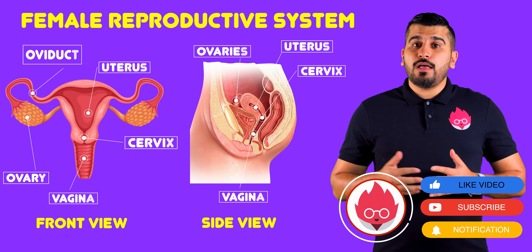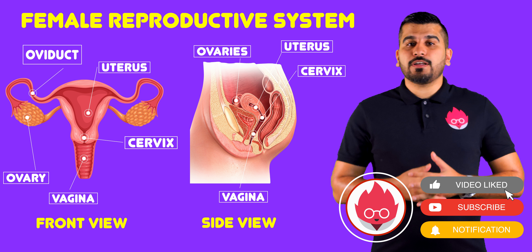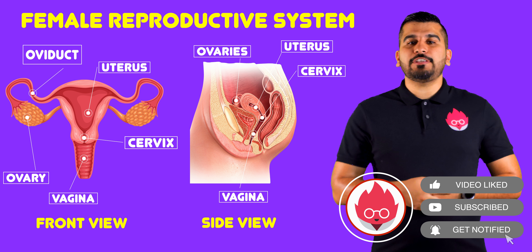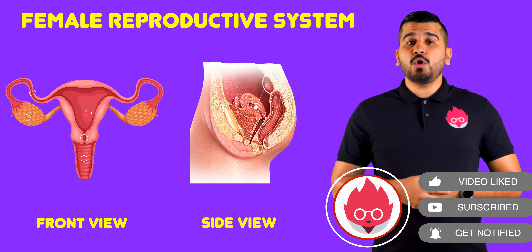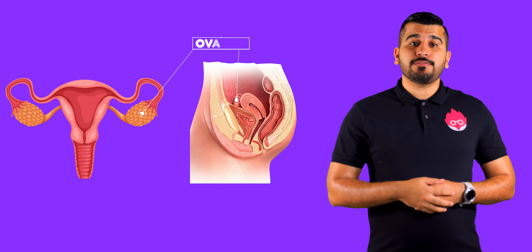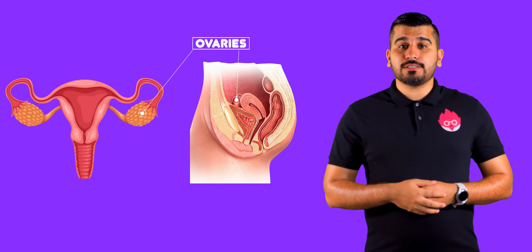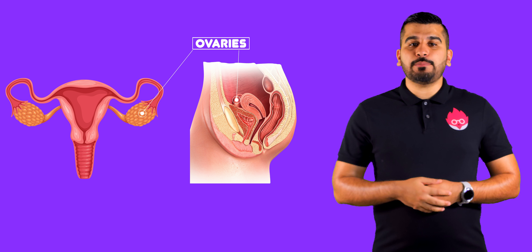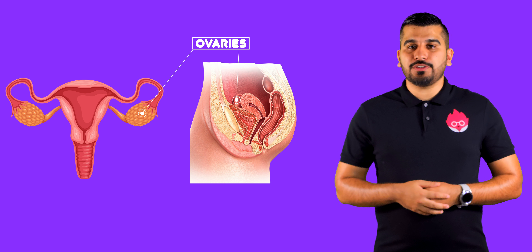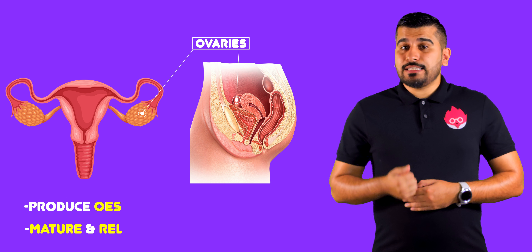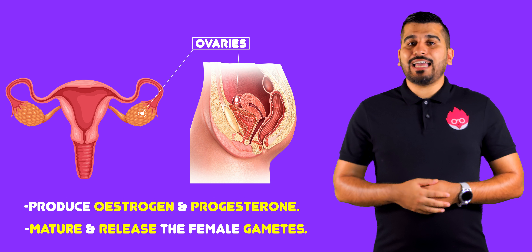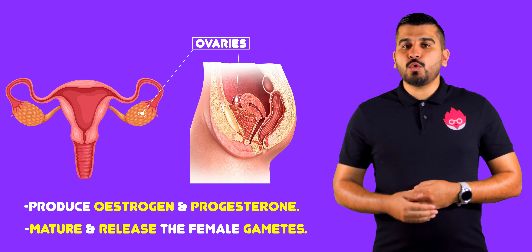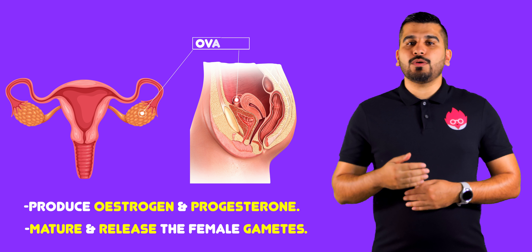This diagram shows the frontal and side view of the female reproductive system. The ovaries contain the female gametes, which have two main roles in female reproduction. Firstly, they produce hormones oestrogen and progesterone, and they mature the female gametes.